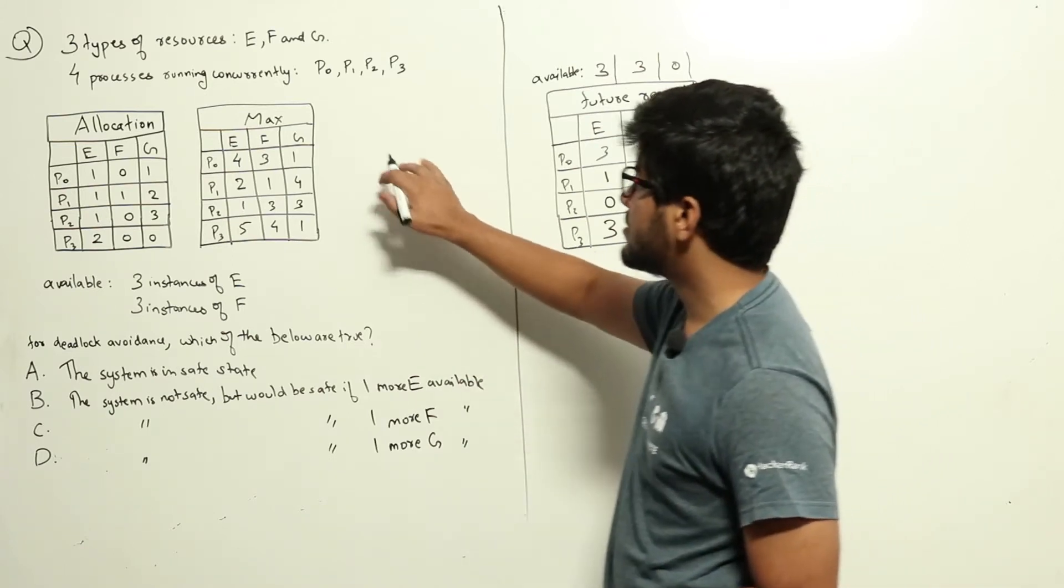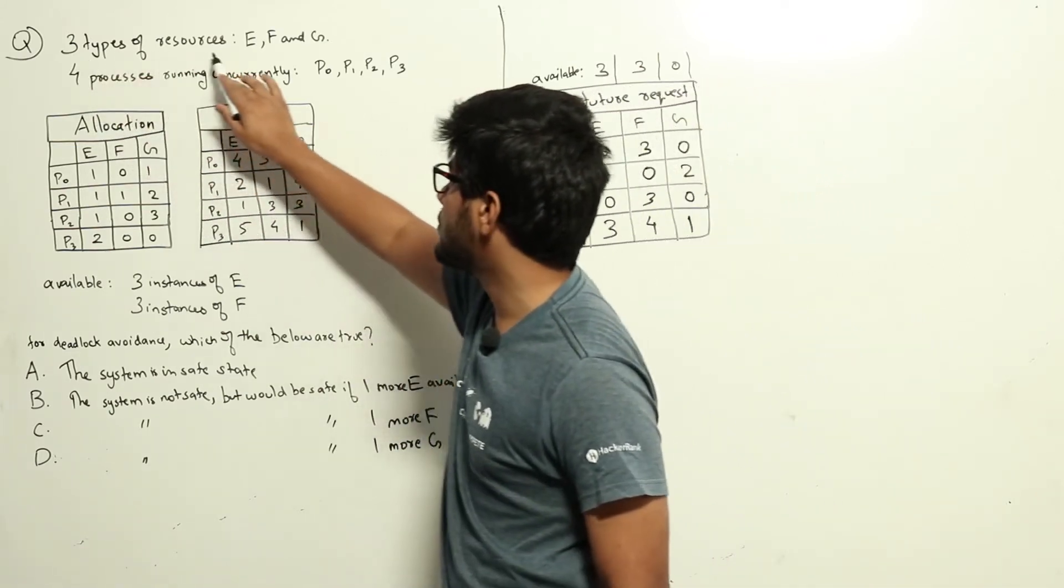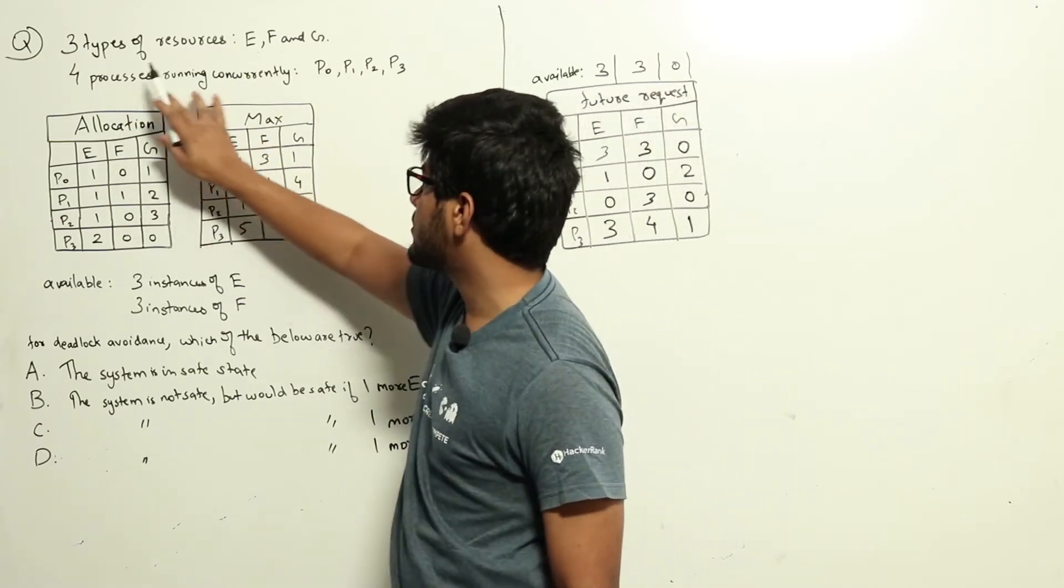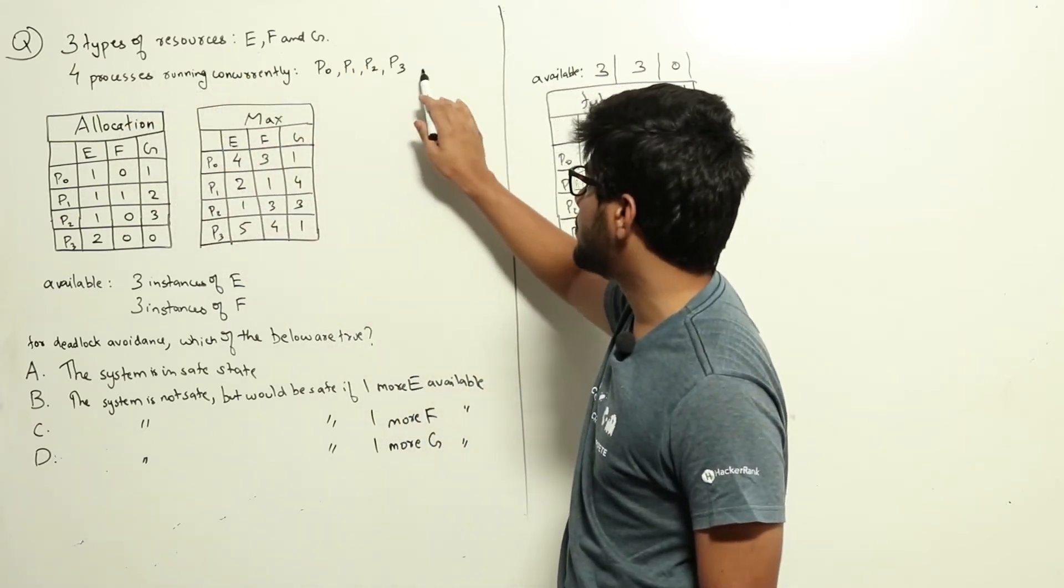The summary is: we have been given three types of resources E, F, and G, and there are four processes currently running: P0, P1, P2, and P3.